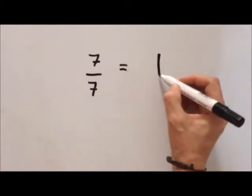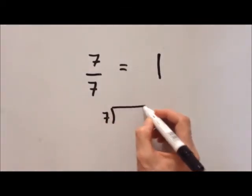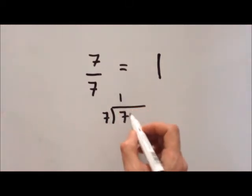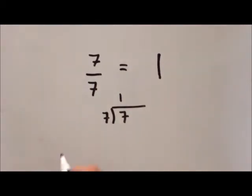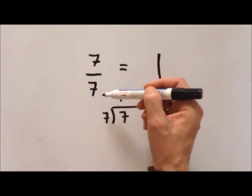But I'll prove it to you with the bus stop method. 7 and we'll put the bus stop and we'll put the 7 on the inside. How many 7s go into 7? 1. And there's no remainders. So when the numerator and the denominator are the same, then that equals a whole.